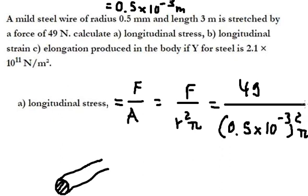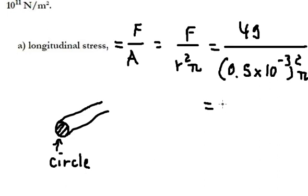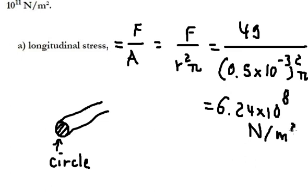So we calculate this one, we have 6.24 × 10⁸. The unit is newtons per square meter, because this one is newtons, this one is area.